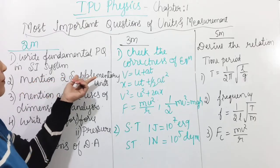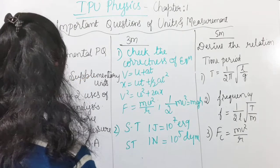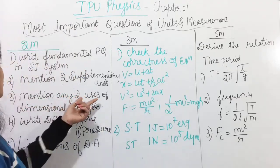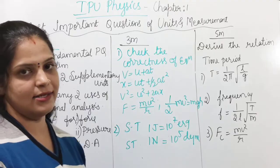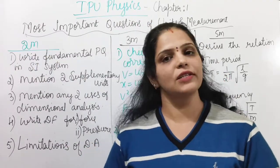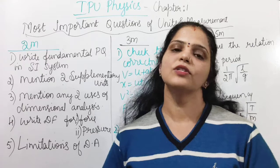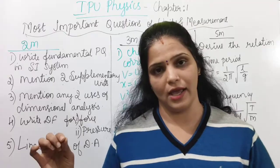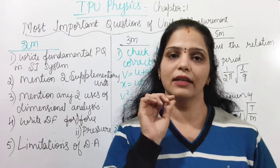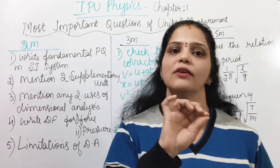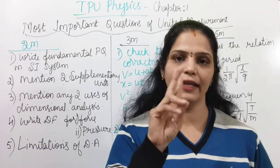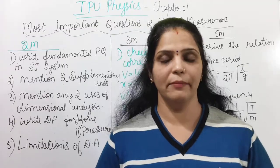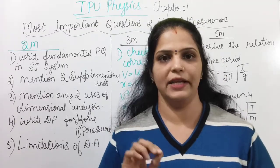Next, mention 2 supplementary units that is radian and steradian. Any 2 uses of dimensional analysis. There are 3 uses. Dimensional analysis is used to check the correctness of an equation. It is used to convert one system of units into another system and it is used to derive the relationship between physical quantities. You can write any 2. And sometimes this question is also asked for 3 marks. So you know down all the 3 applications.